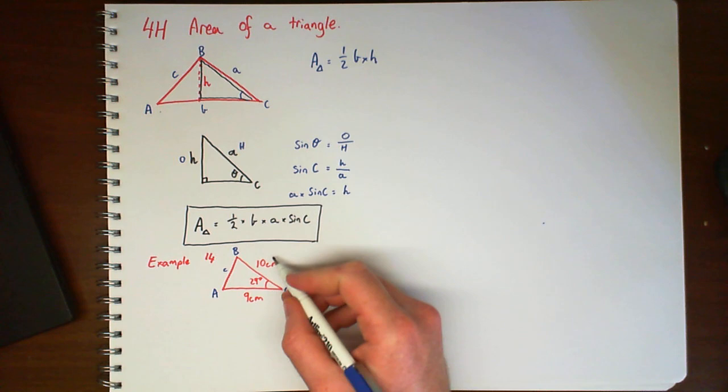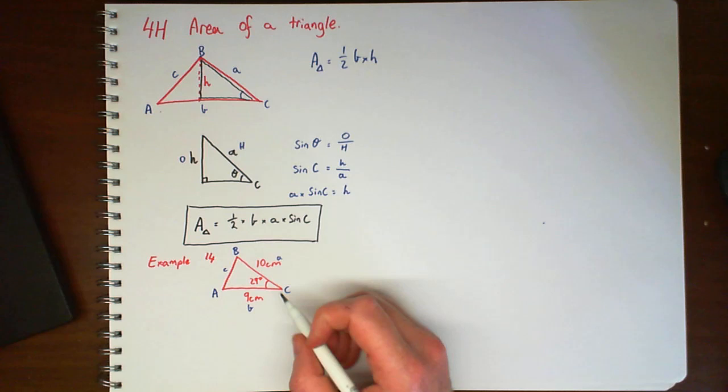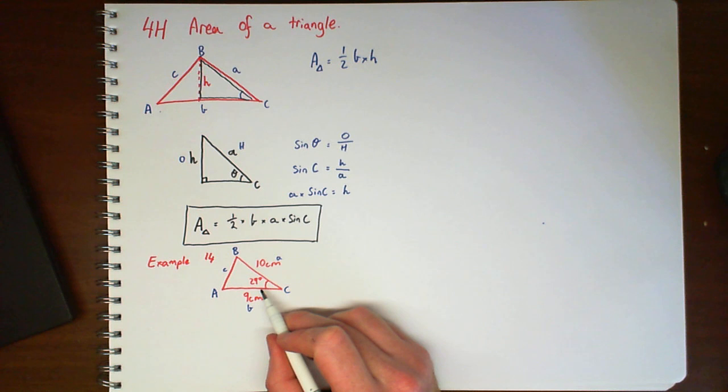we've got A and we've got B. So little c, little a, little b. So very important we jot down the right letters. So again like this cosine rule, use C for your angle.